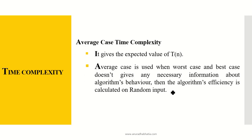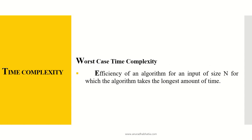Average case complexity gives the expected value of T(n). It is used when worst case and best case do not give necessary information about the algorithm's behavior, and the algorithm's efficiency is calculated on random inputs. The worst case is the efficiency of an algorithm for input of size n for which the algorithm takes the longest amount of time. For example, if you are searching for a book in a pile of books and find it at the bottom, that is the worst case. Finding it first is the best case, and finding it in the middle is the average case.